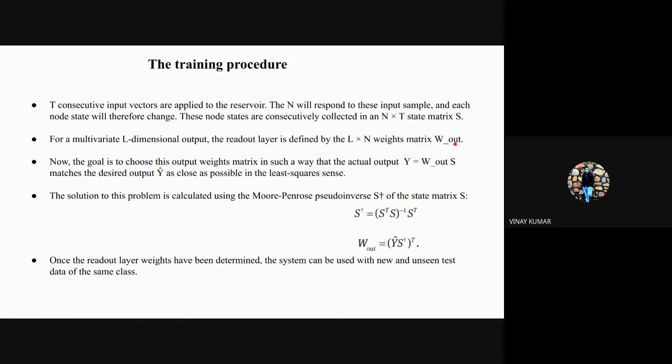Our goal is to choose the weight matrix so that y equals W_output times S matches the desired output. The solution is calculated using the Moore-Penrose pseudo inverse state matrix, and hence we can find W_output which gives us y closer to our desired output.